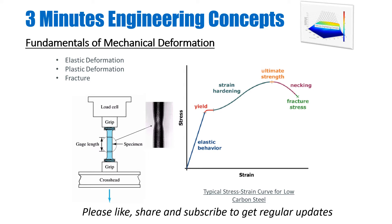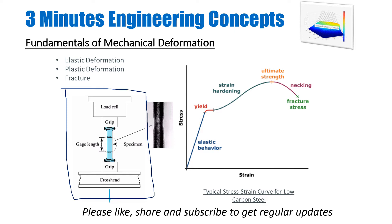If you want to apply a material for a certain application, you have to take it to the lab and get a stress-strain response under different types of loadings. On the left-hand side is a typical uniaxial tension testing machine where you fit your sample, pull it, and measure forces and displacements. You divide the force by the cross-sectional area to get stress, and divide the change in length by the original length to get strain.